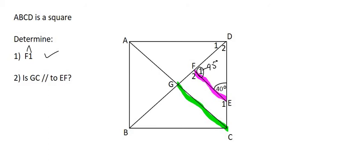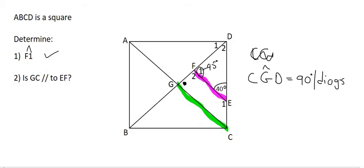What we know is that angle CGD is equal to 90 degrees because the diagonals of a square bisect at 90 degrees.